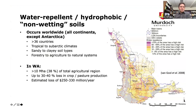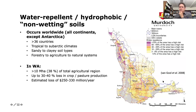Various terms are used — water repellents, hydrophobic, non-wetting — they're referring to the same thing. This is a phenomenon that occurs all over the world, across a whole range of climates, soil types and land use types. In Western Australia, something like 10 million hectares — almost 40% of the agricultural area — expresses water repellents to some extent. The map on the right is a DPIRD product which shows the abundance of water repellents by region, and virtually every region has some soils with water repellents.